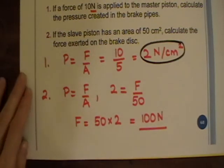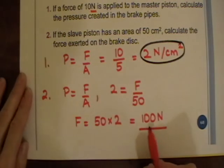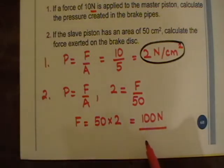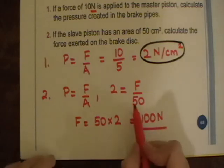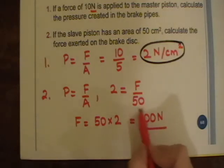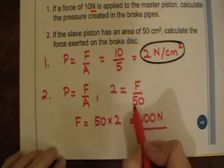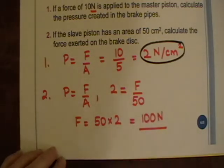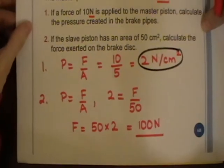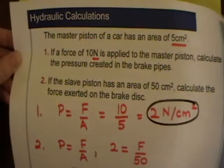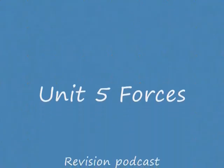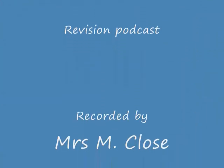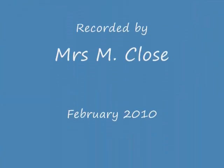So we are using a force of 10 newtons to produce a force of 100 newtons — that is obviously a really useful mechanical advantage. It works because the area of the slave piston is 10 times that of the master piston, and therefore we get 10 times the amount of force produced. And that's the end of hydraulics and pressure.